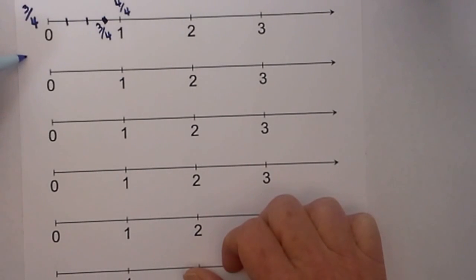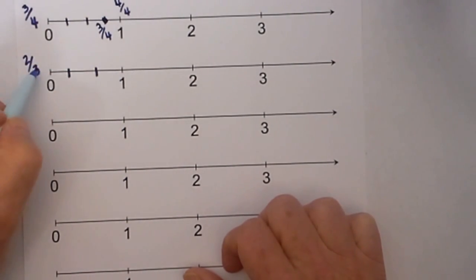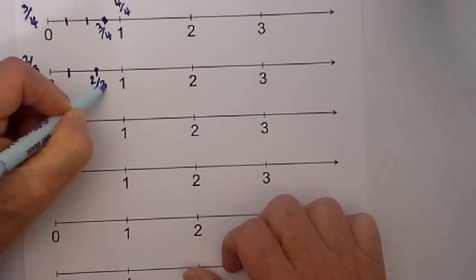Up next is 2 thirds. So we have 1, 2, 3 because of the denominator. Then we go over 2, 1, 2 because this tells you how many spaces in between the whole numbers. So 2 thirds will be right here.